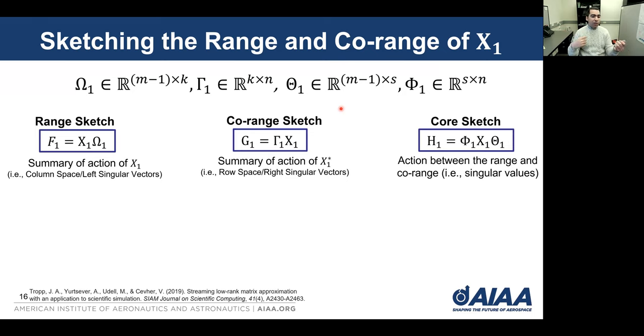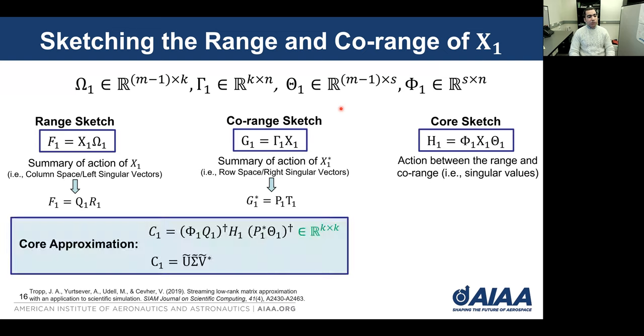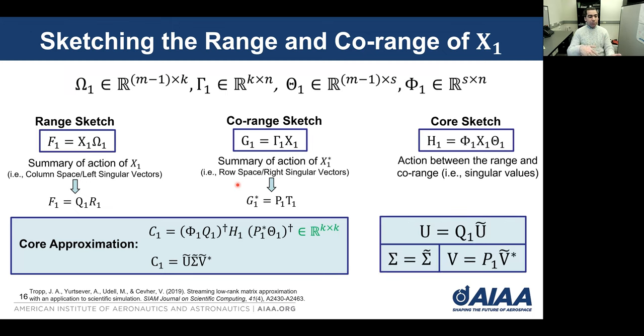Again, we perform QR for the range and the co-range sketches. Then we define the core approximation, which is a small square matrix with dimension k by k, and we perform the SVD on this matrix very efficiently. Finally, we map back to our original dimensions and continue the DMD procedure.